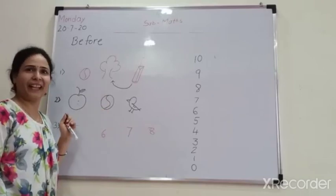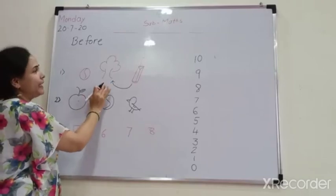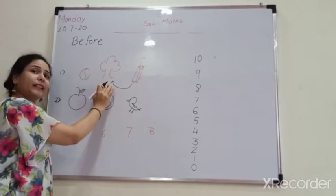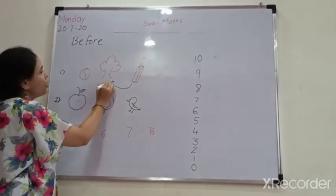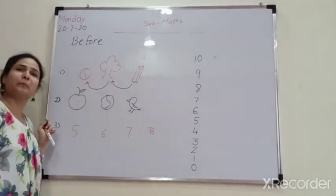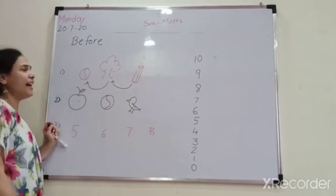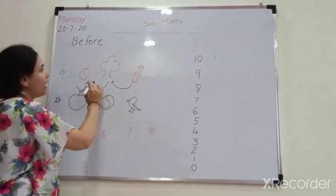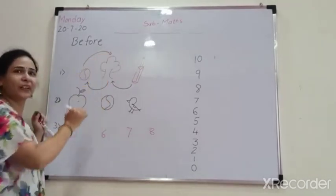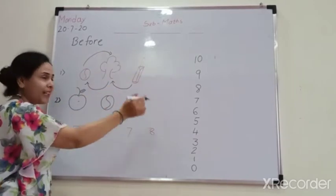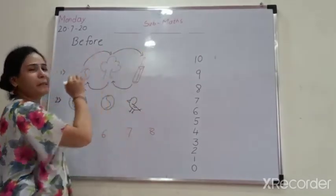There is a tree. Now, here, before tree, what is there? Yes, before tree there is a ball. If I ask you, after ball, so there is a tree. After tree, there is a bag.